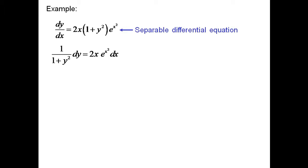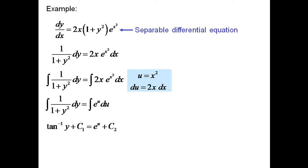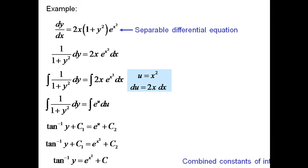By solving it, we separate variables to get 1 divided by (1 plus y squared) dy equals 2x times e to the power x squared dx. Now integrating both sides, we have the integral of 1/(1 plus y squared) dy equals the integral of 2x times e to the power x squared dx. We assume x squared equals u, so du equals 2x dx. This simplifies to the integral of 1/(1 plus y squared) dy equals the integral of e to the power u du. Integrating, we get arctan(y) plus c1 equals e to the power x squared plus c2, where c1 and c2 are integration constants. So arctan(y) equals e to the power x squared plus c, where c is the combined constant of integration.